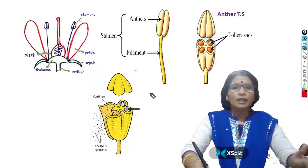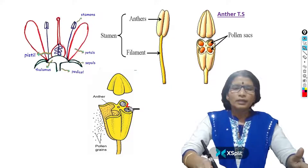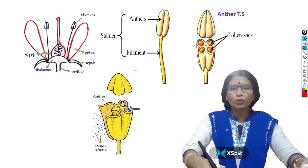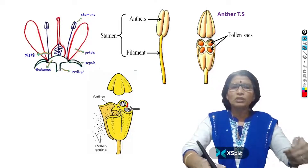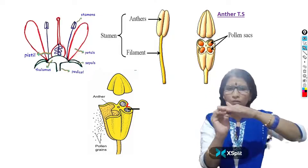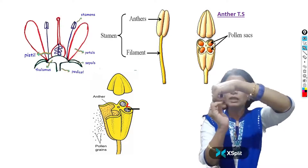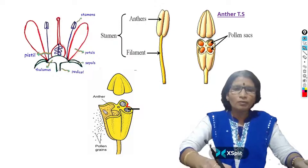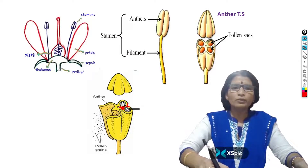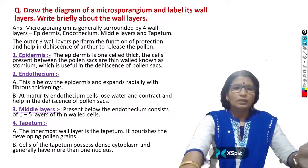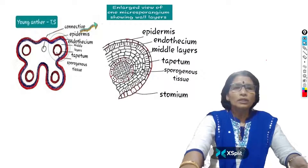In what way do the stomium and endothecium help in the dehiscence of the anther? The stomium is present exactly between two pollen sacs, and the endothecium is below the stomium. At the time of dehiscence, the stomium and endothecium cells lose water, causing each microsporangium to contract. A slit forms between two microsporangia. The tissue present between two pollen sacs is reduced, the two pollen sacs mingle together, and all the pollen grains are liberated outside through the slit. So by writing these points you can get 5 marks, and drawing these two diagrams you can easily get 3 marks.